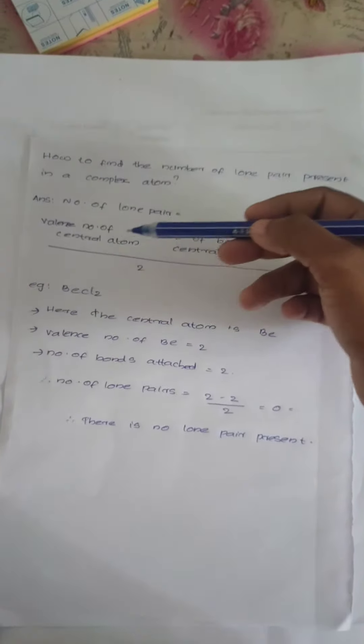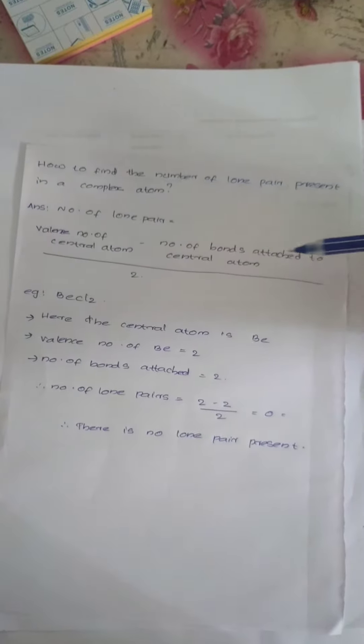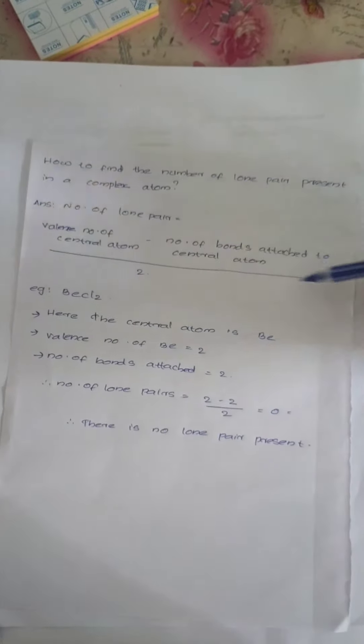The equation is: valence number of central atom minus number of bonds attached to central atom, all divided by 2.